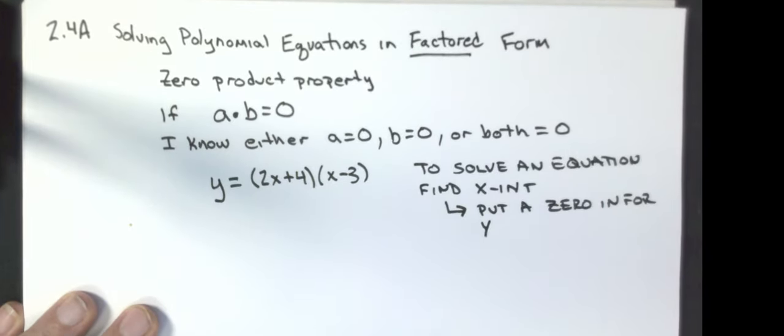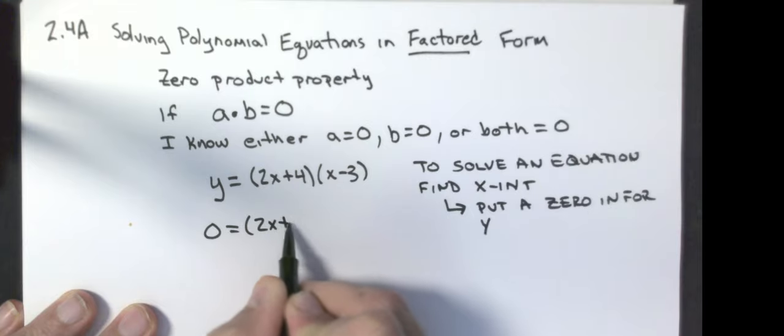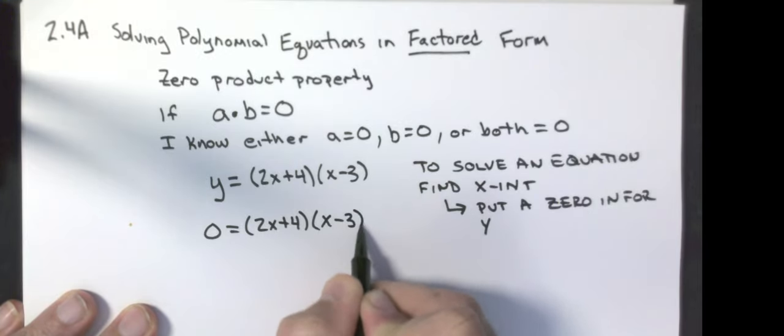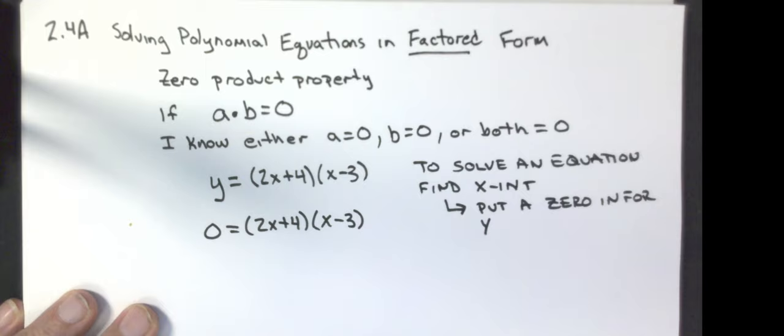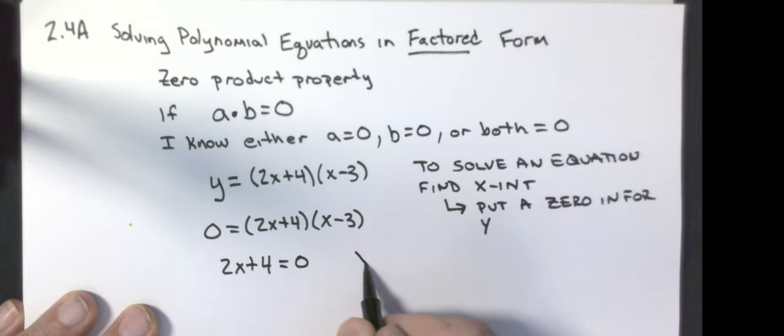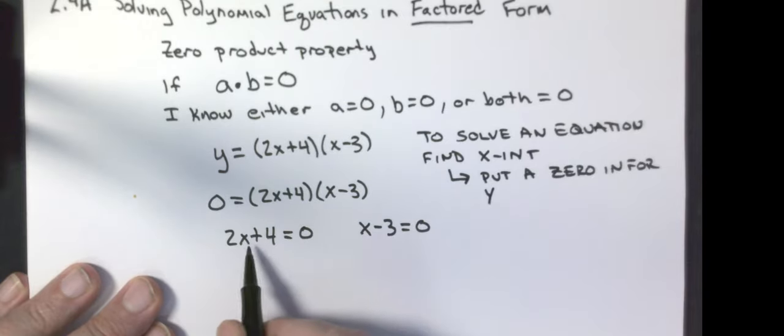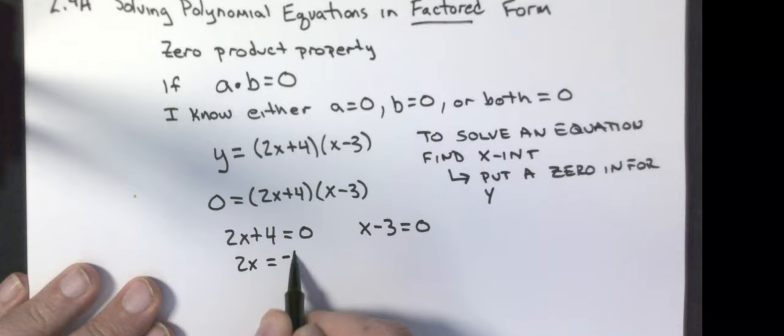For me to solve this equation, I'm going to put a zero in for y. Notice, I have a multiplication problem whose answer is zero. From here, I know that 2x plus 4 has to equal zero. I'm going to subtract 4, so 2x equals negative 4. Divide by 2, x is equal to negative 2.